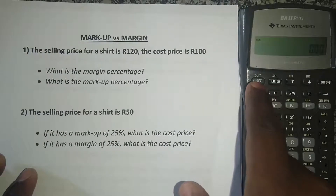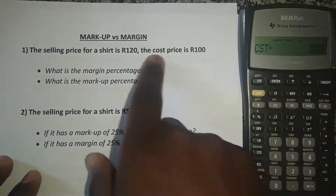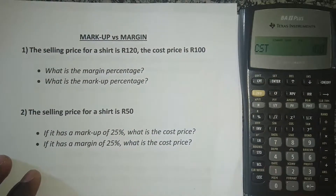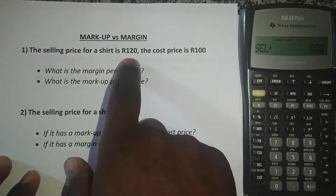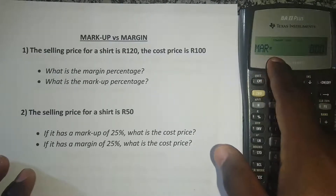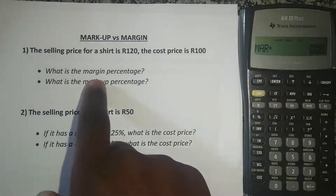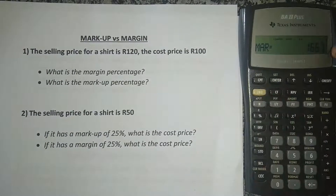You press second function, and after you press second function, you press here where it's written profit — number three. So you press second function and then three, and then it asks you what the cost price is. We are told the cost price is 100 Rand, so I press 100 and then enter. Then I press the downward arrow and it's asking me what the selling price is — it's 120 Rand. So I put 120 and then enter, then press the downward arrow and now it's asking me what the margin is. I want to compute the margin percentage, so I just press CPT — the very first button on the top left of the calculator — and it has given me the margin: 16.67%.